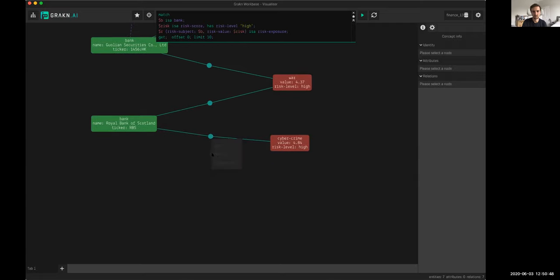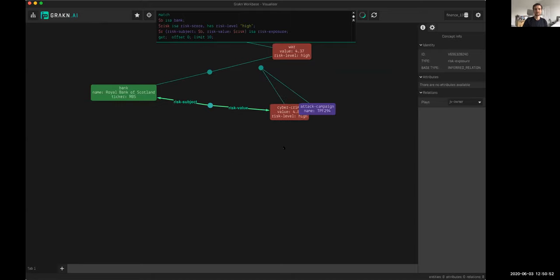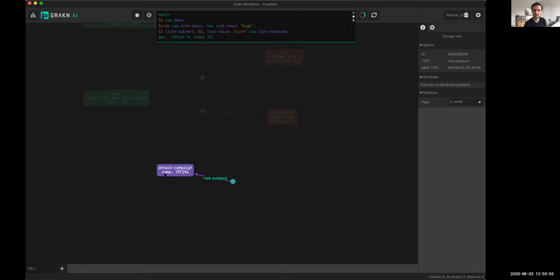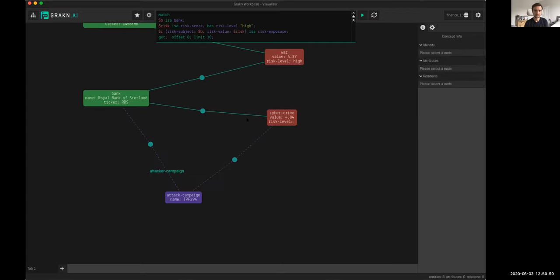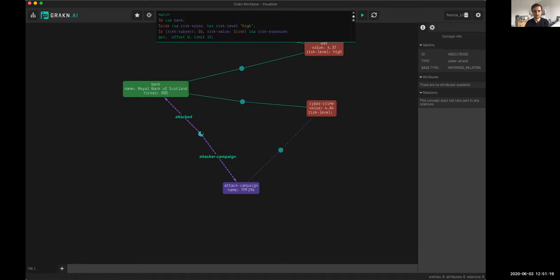If we look at this one, why is RBS connected to that cybercrime score? If I press explain, I see that under the hood there's an attack campaign called TPF 294, which is some cyber attack connected to that cybercrime score. But this relation is interesting because this is a persistent relation—we see that, it just says relation, its base type. However, this one is also inferred as well. We're dealing with an inference in an inference.